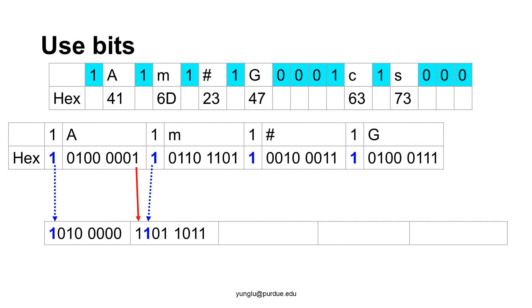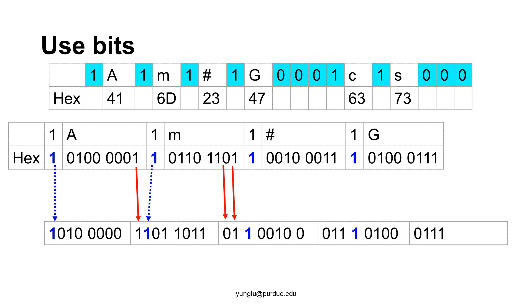The next bit is a control bit 1. Since the first bit is already occupied by the last bit of A, this control bit has to be the second bit in the byte. The next 6 bits come from character M. M is 6D in hexadecimal. The first 4 bits are 0, 1, 1, 0 and the next 4 bits are 1, 1, 0, 1. Two bits in this byte are already used, thus only 6 bits from M can fit in this byte.